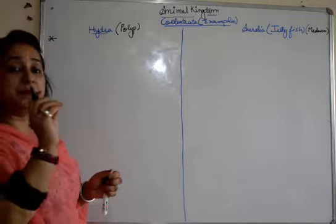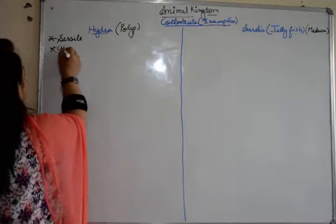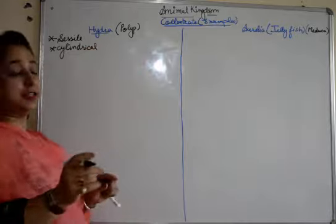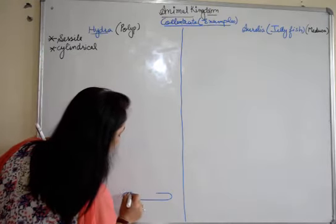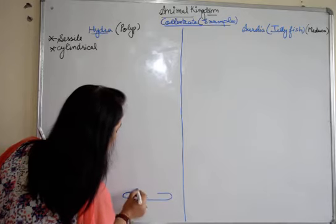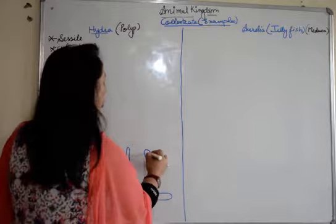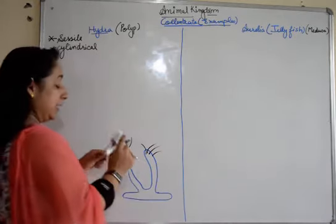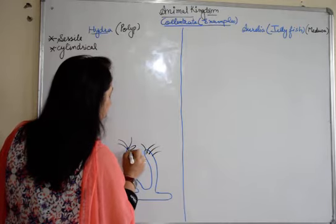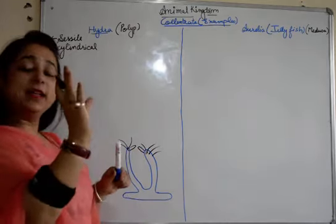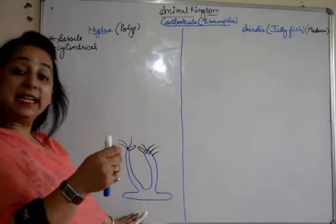Hydra is sessile, that means it is stationary. It's cylindrical. When we see the shape of the Hydra, what do we observe? So if you see the structure of Hydra, Hydra is attached to a substratum and it has this kind of structure. This is the basic structure of a Hydra, and it will show the tentacles here. If you see the structure, the tips are making a narrow opening. This is the shape of a Hydra where you can see it's cylindrical.